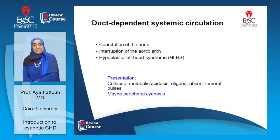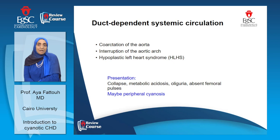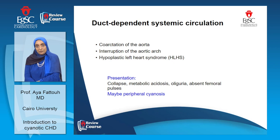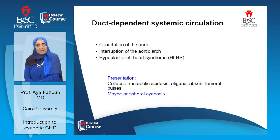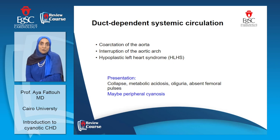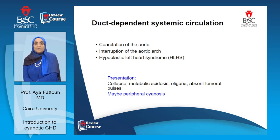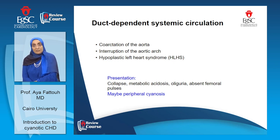Regarding the duct-dependent systemic circulation, this group of anomalies does not present with the profound central cyanosis seen in duct-dependent pulmonary circulation or poor-mixing TGA. The cyanosis here is most probably peripheral, due to low cardiac output, systemic hypotension, and possibly shock and circulatory collapse. We face this problem in patients with severe coarctation, hypoplastic left heart syndrome, and interruption of the aorta.